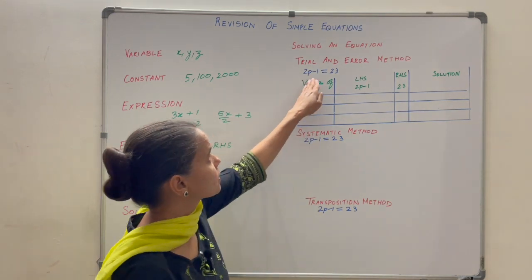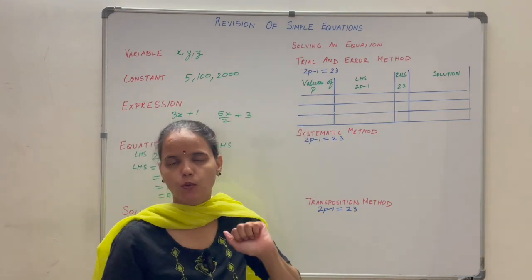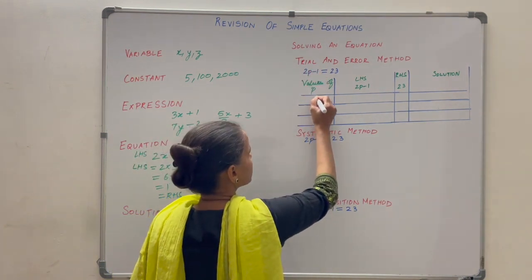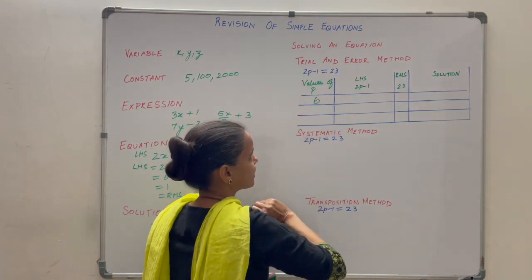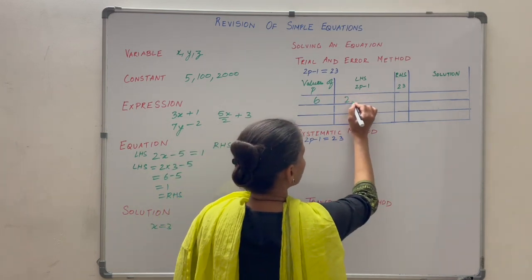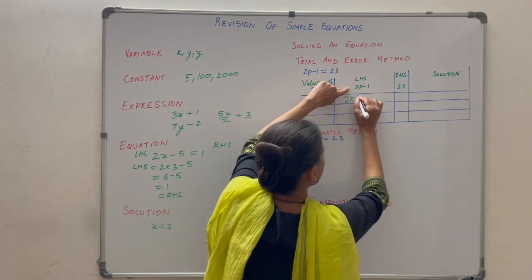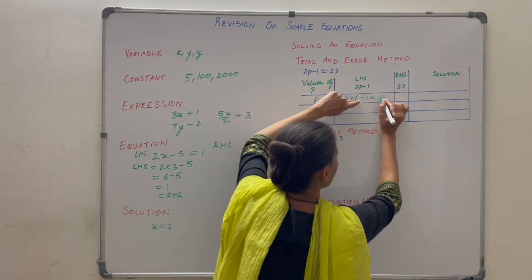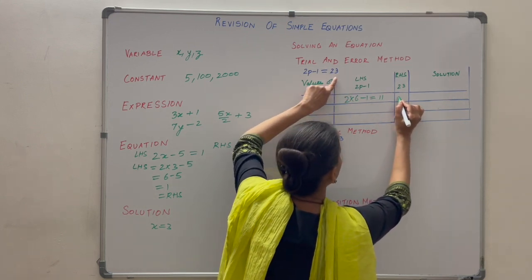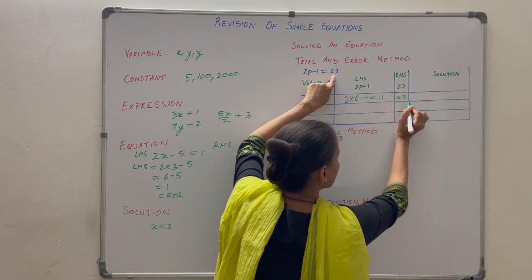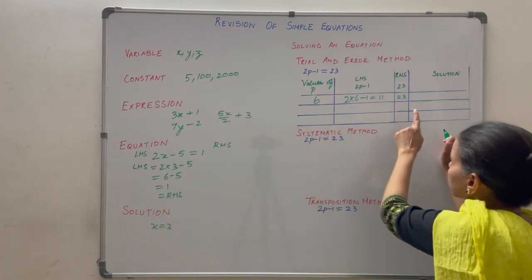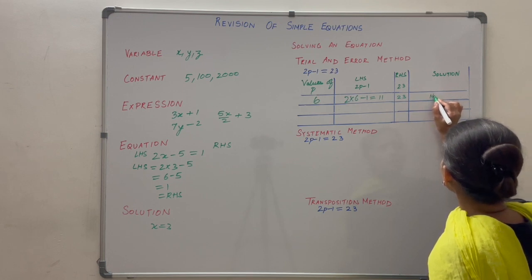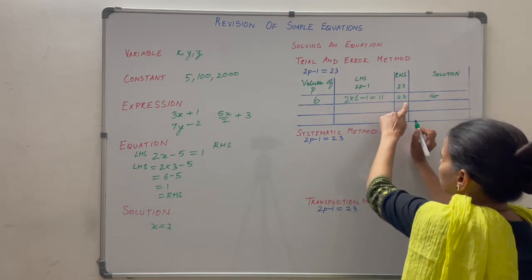Let us take the equation 2p minus 1 equals 23. Putting p equals 6: 2 into 6 is 12, minus 1 is 11. On the right hand side you have 23. Is left hand side equal to right hand side? No. So it is not a solution because LHS is not equal to RHS.